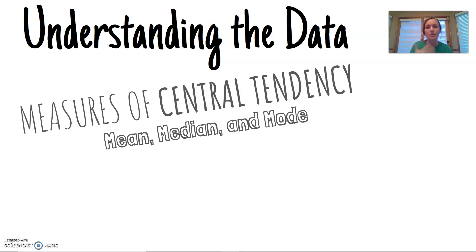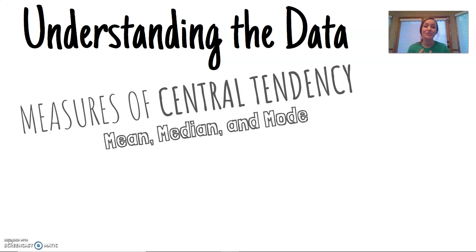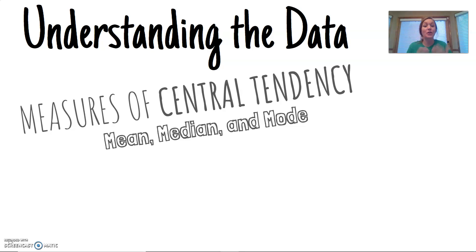The mean might make it appear the average is a three because of several ones and several fives pulling it there, but what if out of 100 students, 85 people scored a four? That would be the mode — the most commonly occurring number. It would be really valuable to know that most students got a four even though the average appears to be a three. That's where mode is really important.